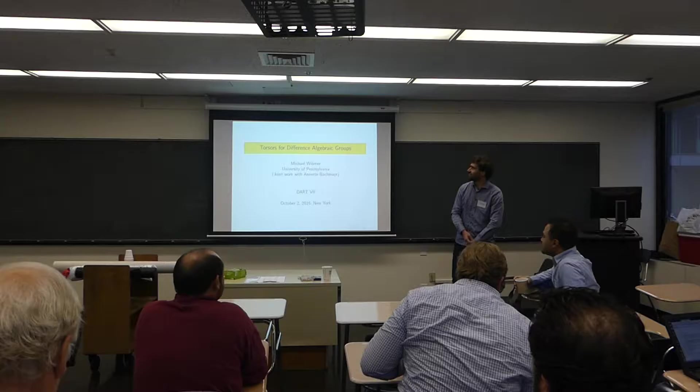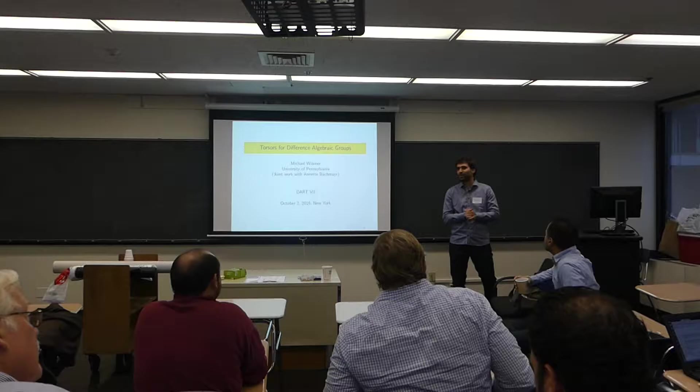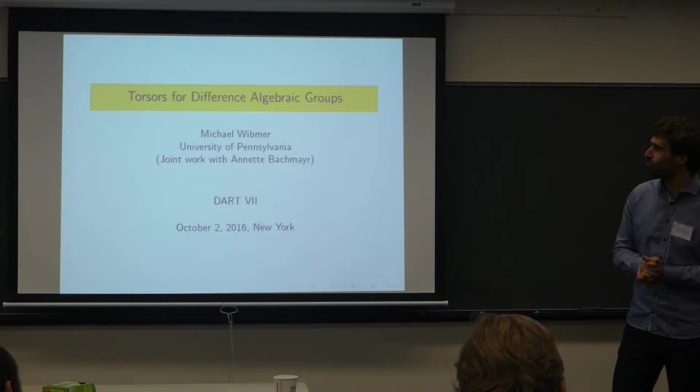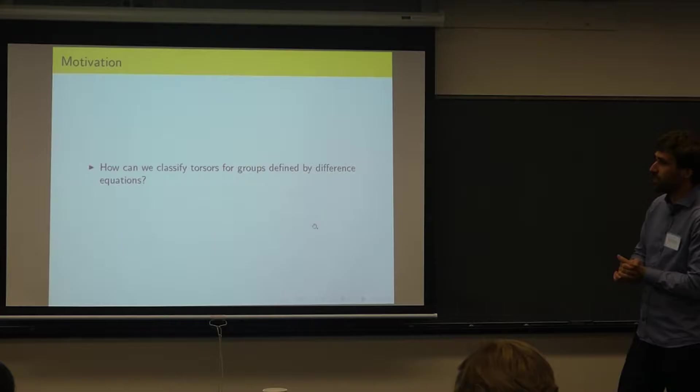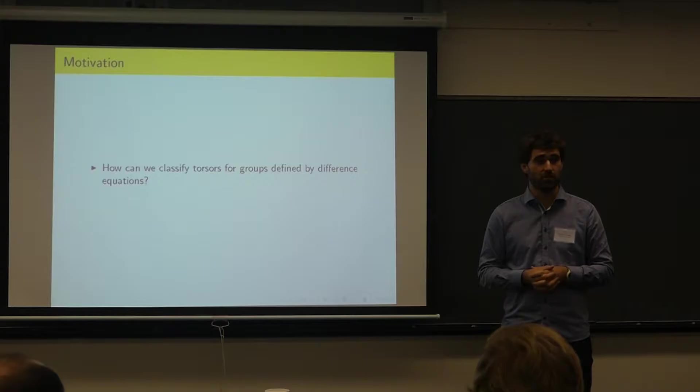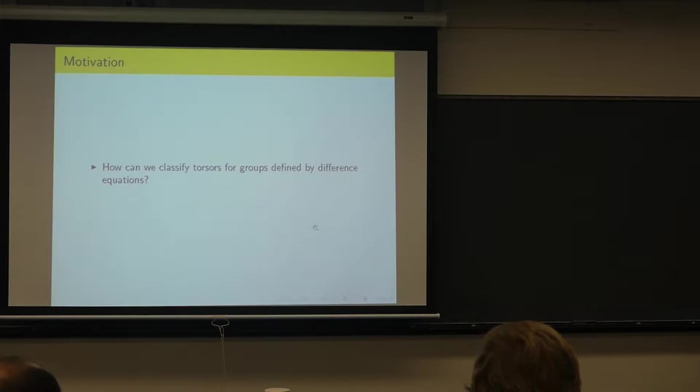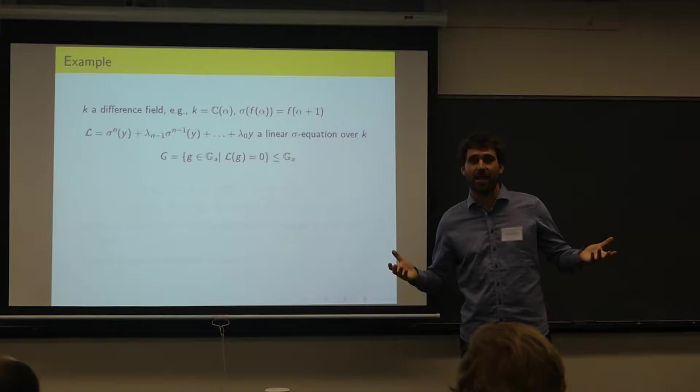We want to communicate here in Pennsylvania. The title is 'Six Torsors for Different Subjective Groups.' Thanks a lot for giving me the possibility to speak here on this nice occasion. I'll be speaking about torsors for difference algebraic groups, and this is joint work with Annette Bachmeier, who is in Bonn. The central question for this talk is: how can we classify torsors for groups by difference equations? I'll explain in a minute what a torsor is, but I'd like to start with an example.